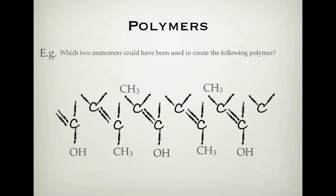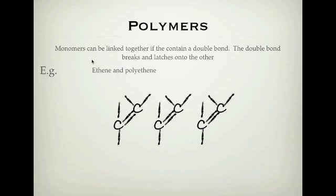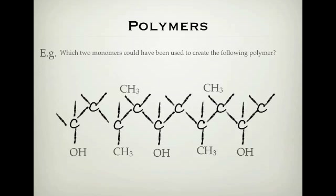To summarise: put in every second bond as a double bond, then remove the single ones that remain — that's how you divide a polymer up into its monomers. To create a polymer, remove the double bond and put it in between the two carbons that used to have the double bond. To break them up, add in your double bond and then remove your single bonds. That's creating a polymer and also breaking a polymer up into monomers.